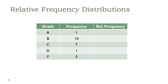A frequency distribution shows the count of every variable. A relative frequency distribution shows the same data and same values, but instead as a percentage. All I'm going to do is look at the total — if I add these up, that's 24 — then take each individual result and divide it by the total.